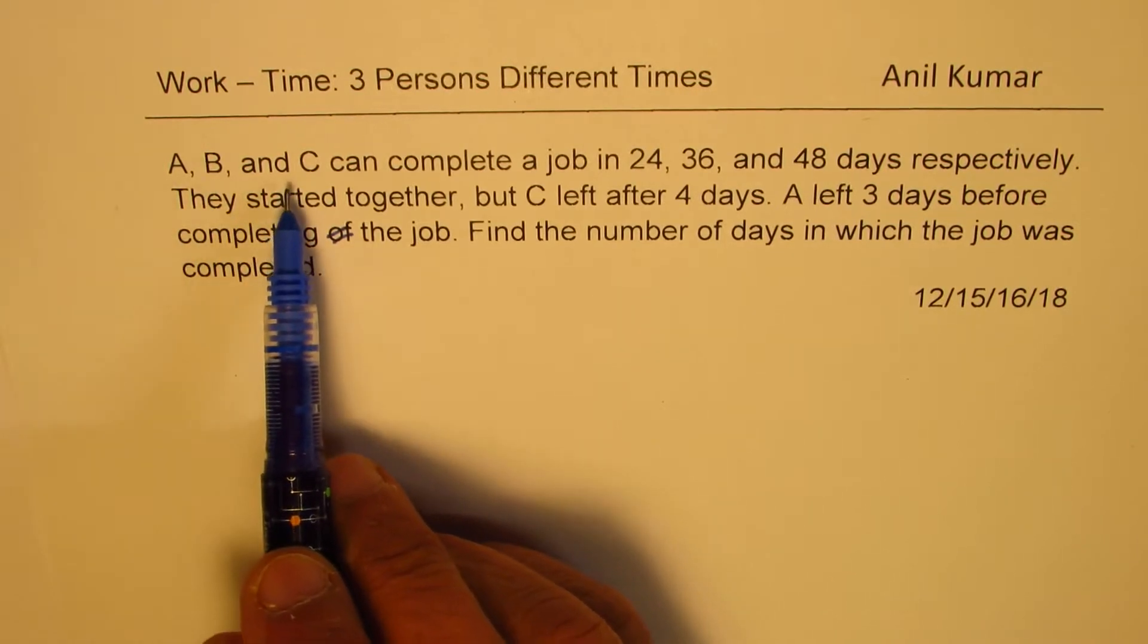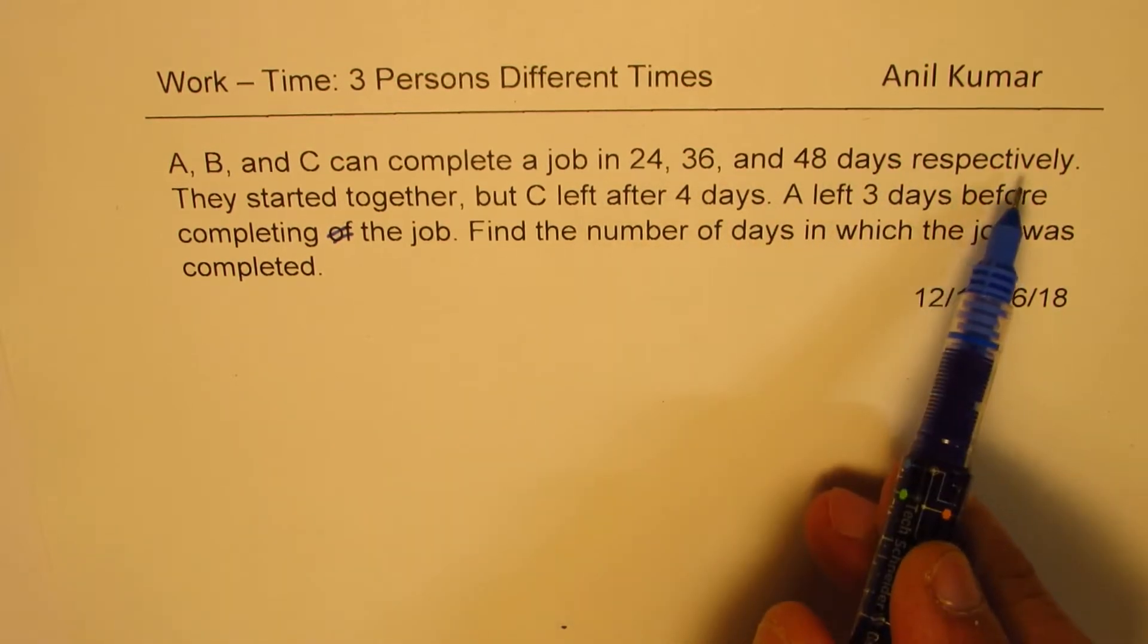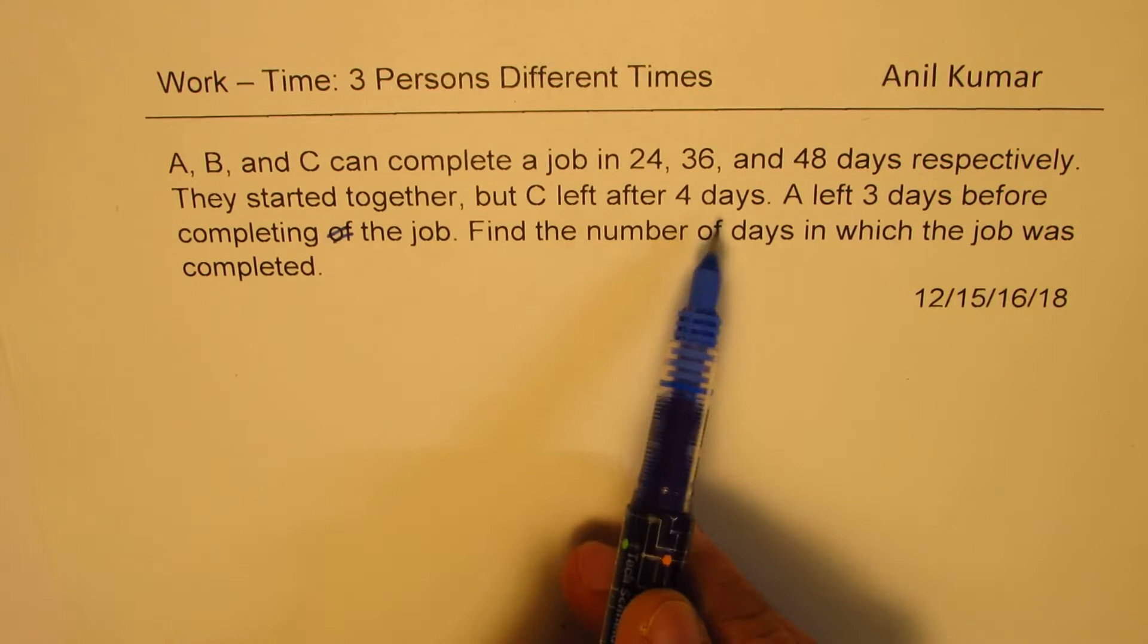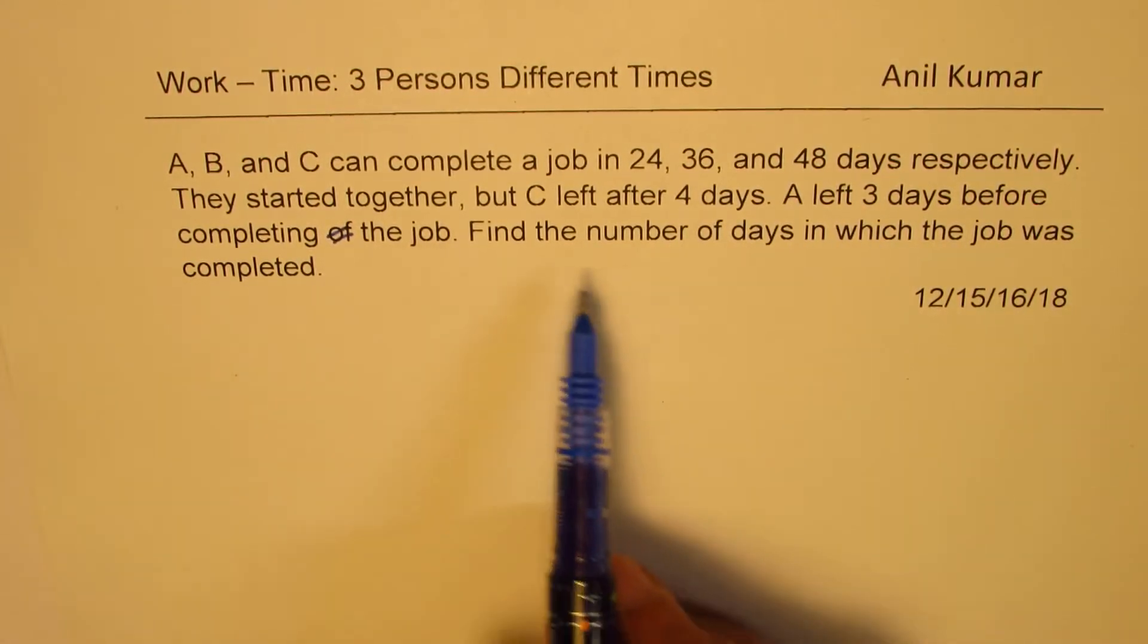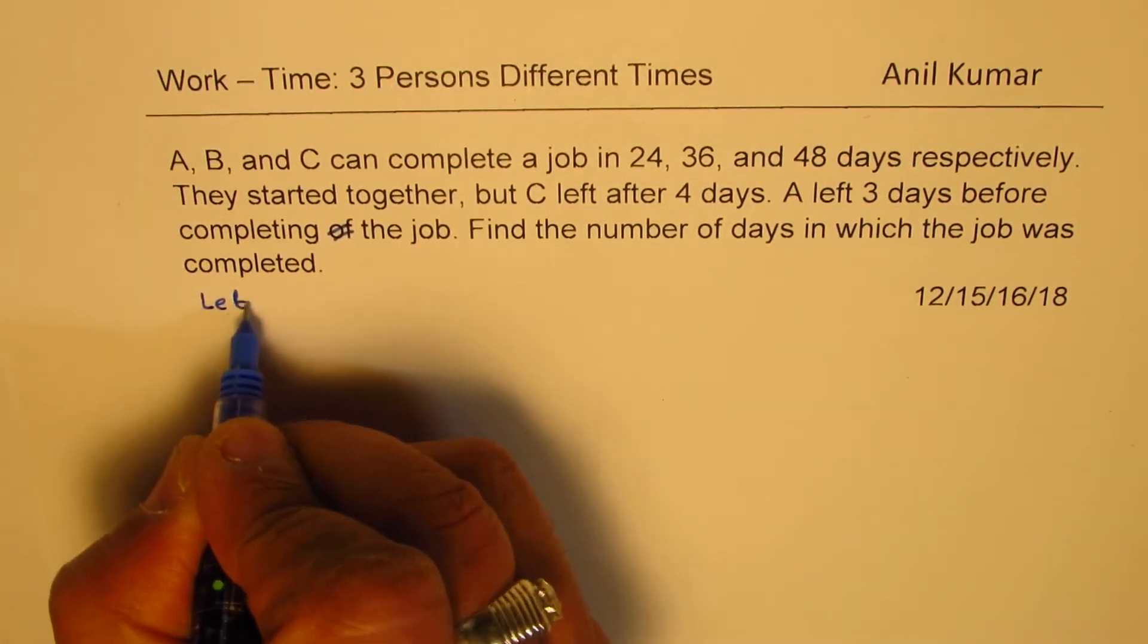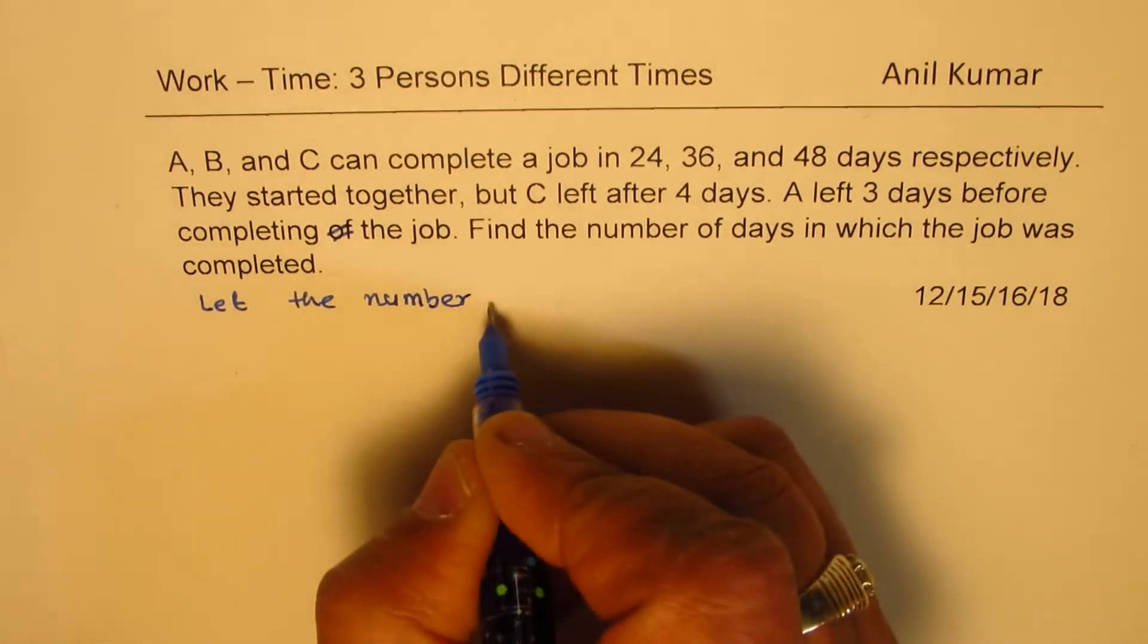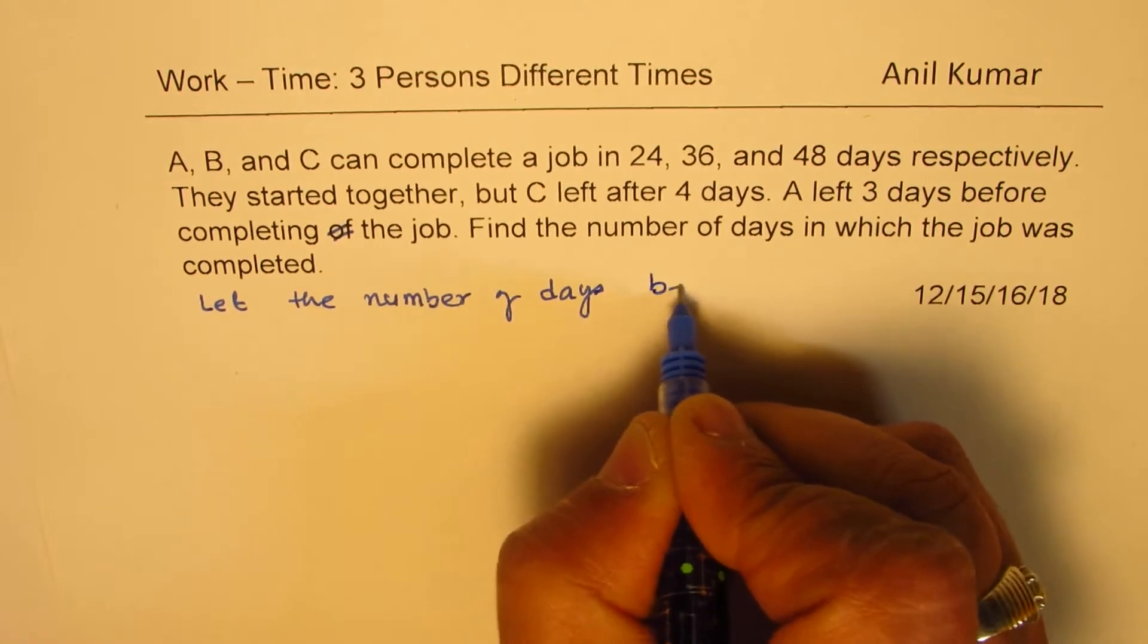A, B and C can complete a job in 24, 36 and 48 days respectively. They started together, but C left after four days. A left three days before completing the job. Find the number of days in which the job was completed. So let that be X, let the number of days be X.